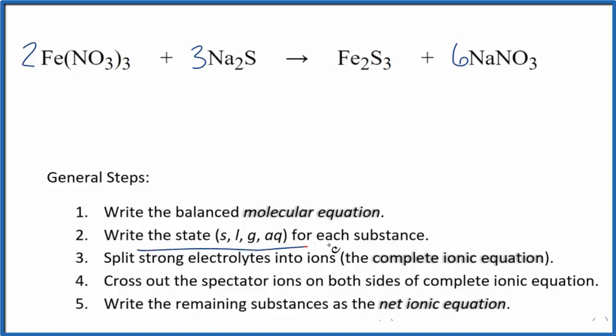Next, we can write the state for each substance. Nitrates are very soluble, if you know your solubility rules. So we're going to put aq for aqueous. That'll dissolve and dissociate into its ions. Sodium compounds are also very soluble. Put aqueous there.